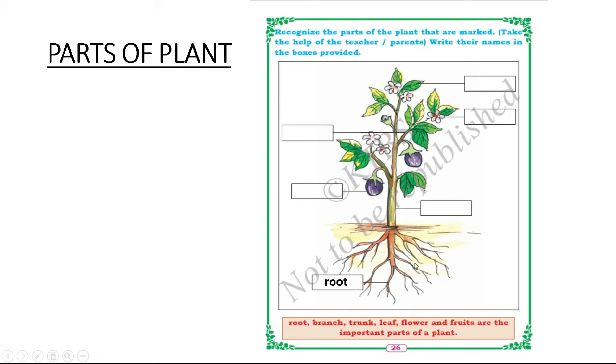It will be underground, present under the ground. Then above the ground, whatever we have here is trunk, also called stem. Then here you can see these are flowers, and this greenish color, those are called the leaf.